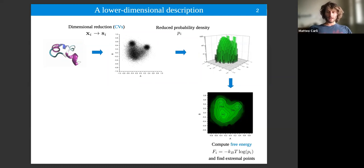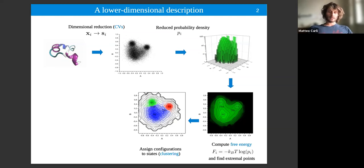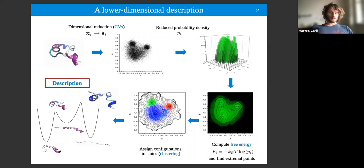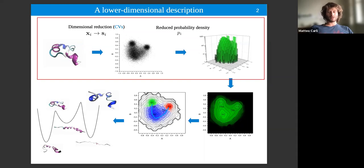Once the landscape is mapped, I can assign all configurations to states by applying clustering — something Alex Rodriguez discussed on Monday. When the data is clustered, I have a description of the system. In the following part of the talk, I will mostly focus on the problems one faces in estimating the probability density or the free energy.